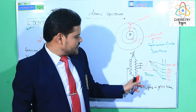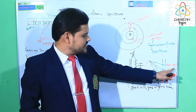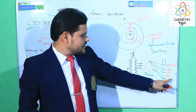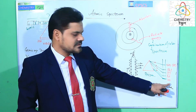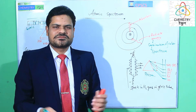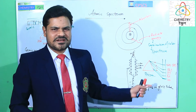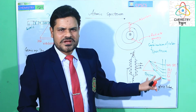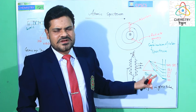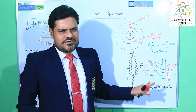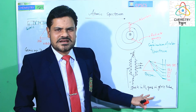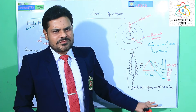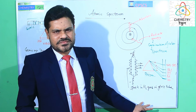From hydrogen, we can get red, green, indigo, violet — different types of spectrum. Mainly four spectrum lines we can get from the hydrogen atom. This is the atomic spectrum of hydrogen.